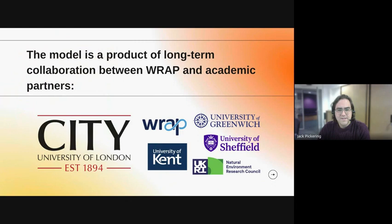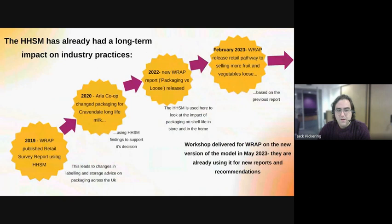To give you some background on the project: the first Houselide Simulation Model of this type was created by Tom Quested at WRAP in 2013, and since then it has been developed and improved upon by collaboration between WRAP and the University of Sheffield. The new version of the model we're talking about today has involved new partners like City University London and the Universities of Kent and Greenwich. Over time the Houselide Simulation Model has had a significant effect on industry practices around packaging and package labeling to reduce food waste.